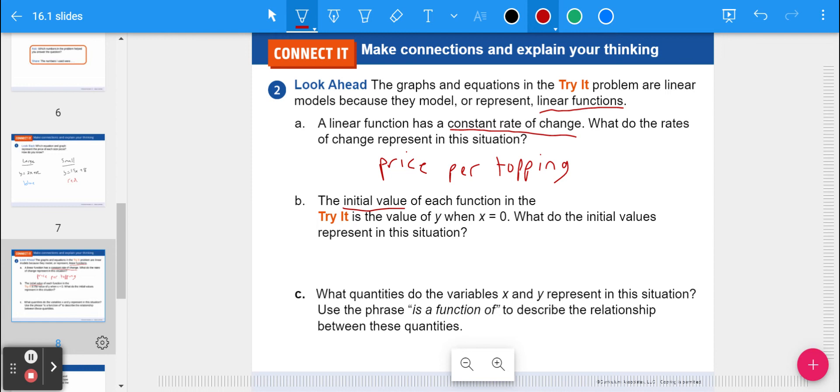Part B: the initial value of each function is the value of Y when X equals zero, your starting price. What do the initial values represent in this situation? The price for pizza before added toppings. If you just want cheese, you just pay whatever that initial value is.